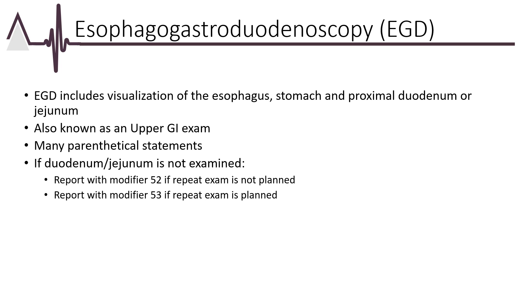Esophagogastroduodenoscopy, or EGD, procedures include visualization of the esophagus, stomach, and the proximal duodenum or jejunum. If the physician does not report an exam of the proximal duodenum or jejunum, append modifier 52 (reduced procedure) to the appropriate code if repeat examination is not planned, or modifier 53 if repeat examination is planned.